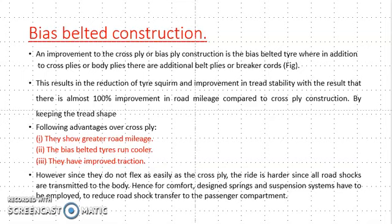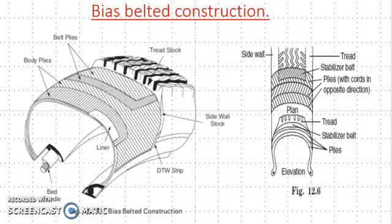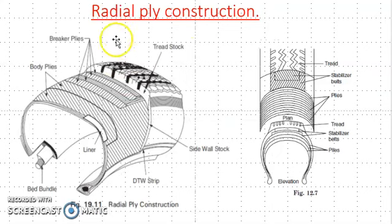Now we will see one more type of tyre — radial ply construction. This is the third type of tyre. First we have seen cross ply, second we have seen bias belt construction, and third is radial ply construction.